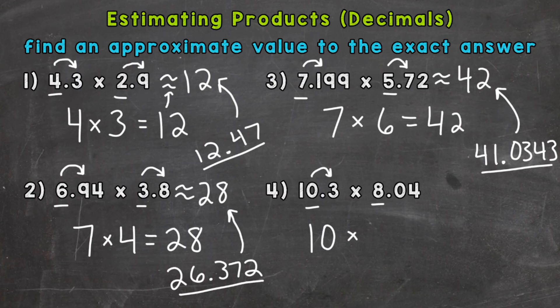Times 8.04 is closer to 8 than it is to 9, so we'll round to 8. And 10 times 8 gives us an estimate of 80.